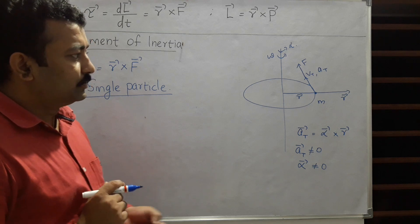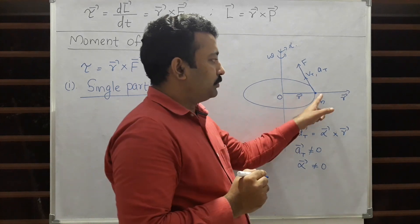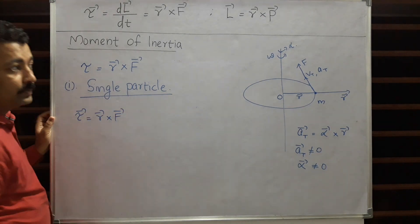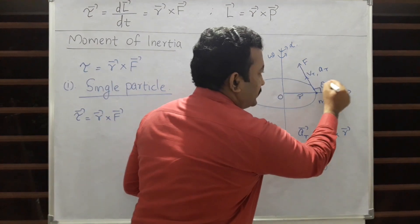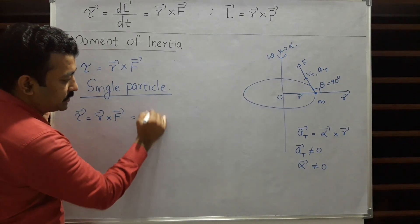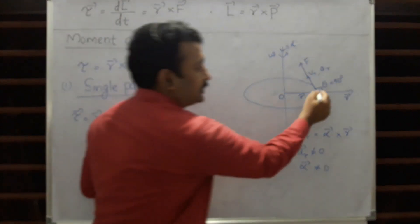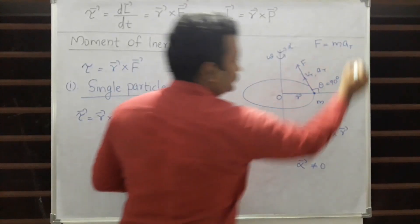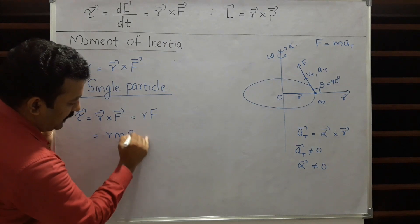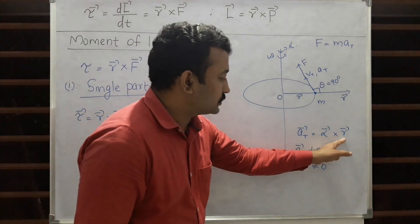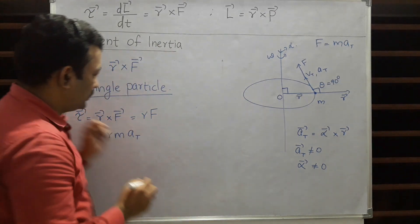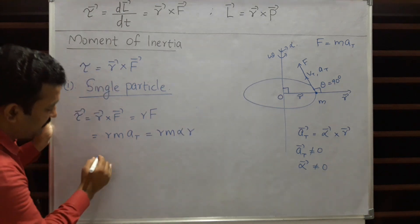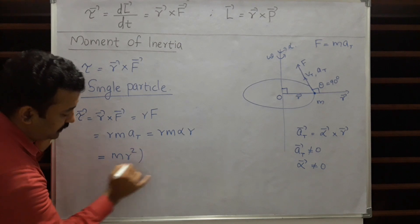Let us write the expression for torque acting on particle m with respect to O. Torque equals R cross F. In this case, r and F are making 90 degrees, so R cross F simplifies to rf. The force f equals m × at, so torque becomes r × m × at. And since at = alpha × r (with alpha and r also at 90 degrees), at becomes r × alpha. Therefore torque equals m × r × alpha × r, which can be written as m·r² × alpha.